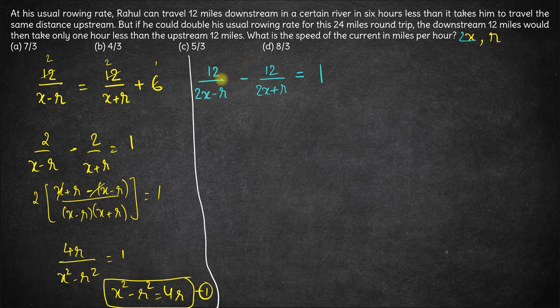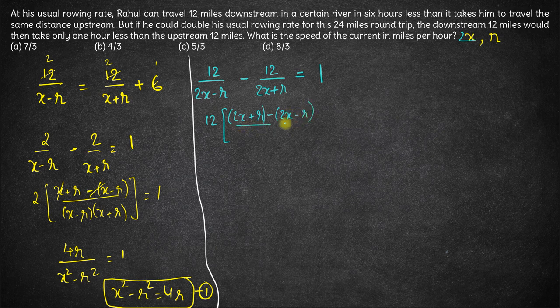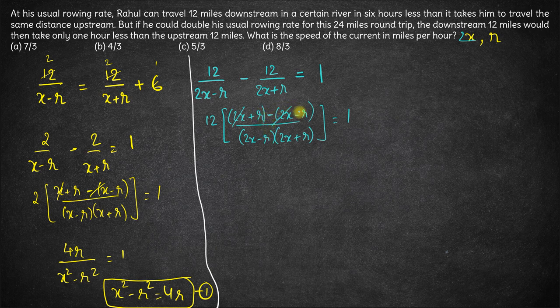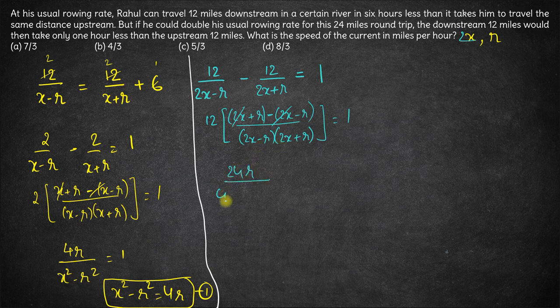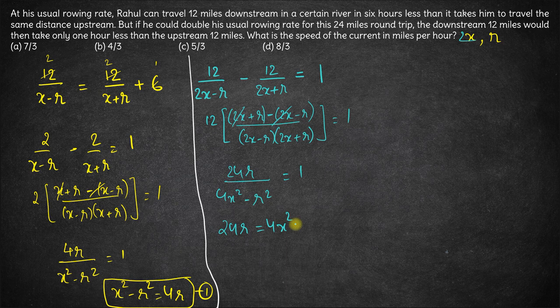So taking 12 common, we have 2x plus r minus 2x minus r upon 2x minus r into 2x plus r is equal to 1. So again 2x minus 2x cancels out, r minus of minus r is plus r. So 2r into 12 is 24r upon 4x square minus r square equals 1. So 24r is equal to 4x square minus r square.